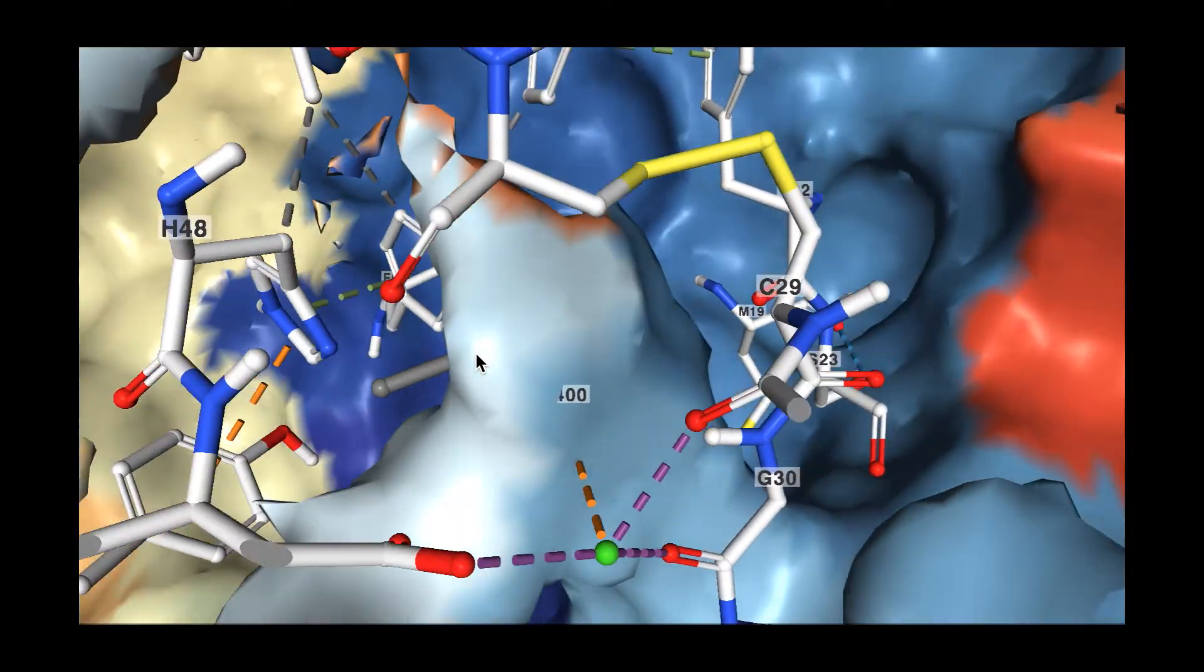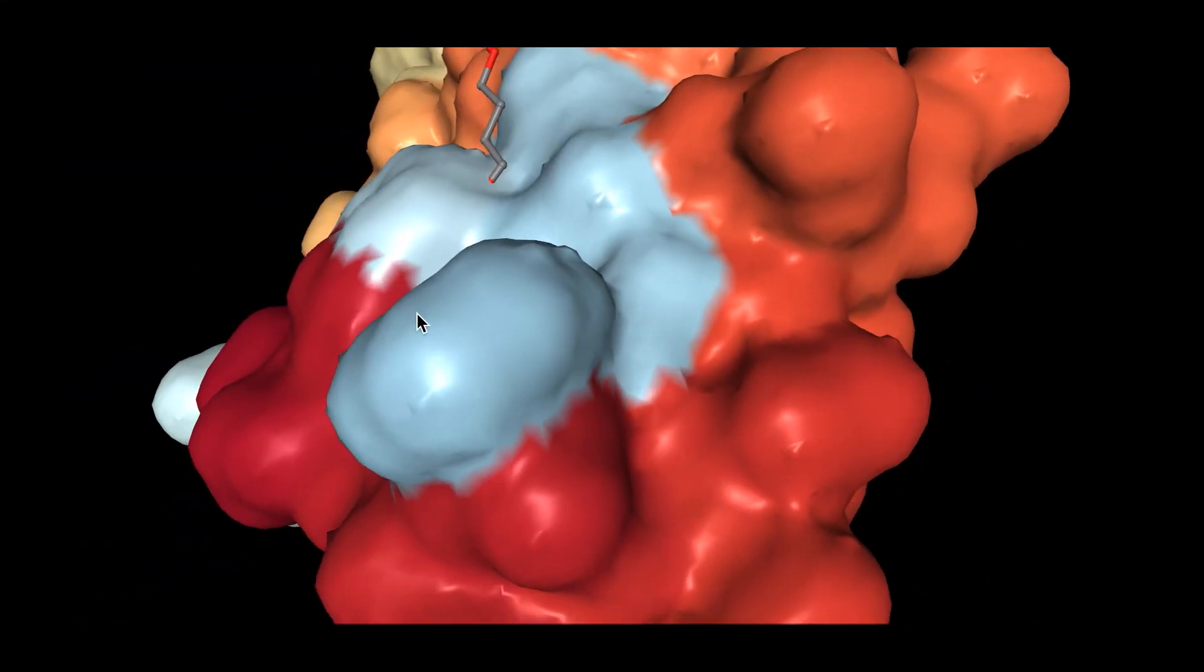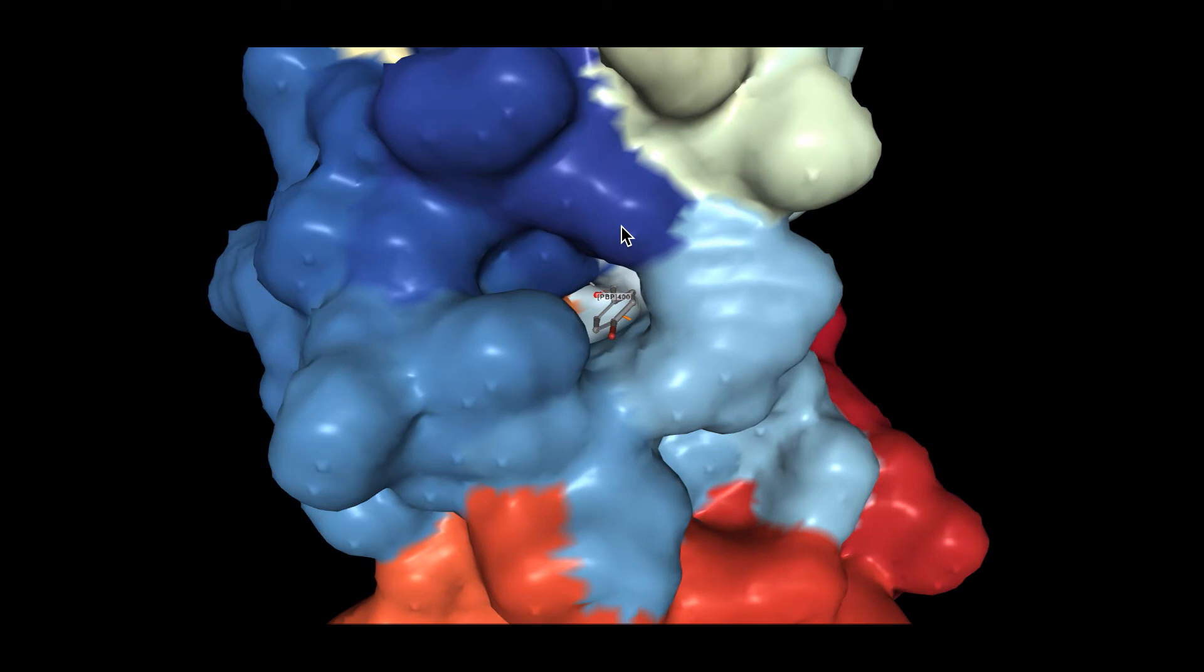PbPb fits into this hydrophobic channel and covalently modifies the active site, specifically the histidine 48, which is the catalytically vital residue. PbPb covalent modification displaces the catalytic water molecule and effectively inactivates the phospholipase activity of acidic phospholipase A2.